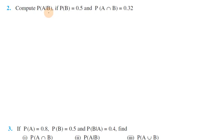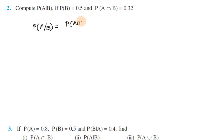Second problem: Compute P(E|B). Given P(E) = 0.5 and P(E∩B) = 0.32. Using the formula, P(E|B) = P(A∩B) divided by P(B), which gives 0.32 divided by 0.5.